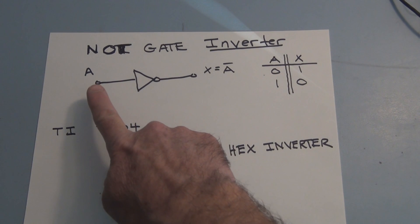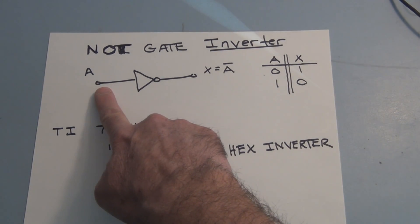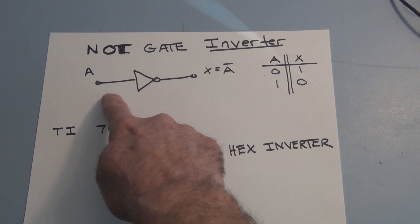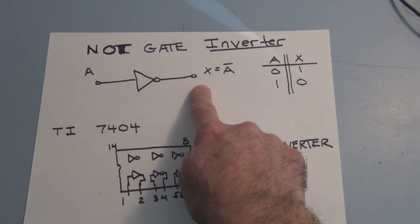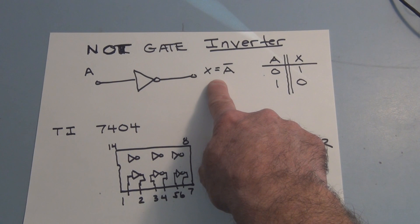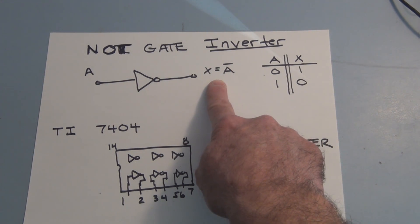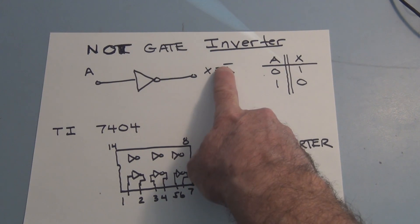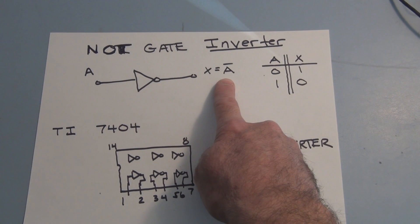So the inverter takes whatever is on the input and inverts it. If there is a one on the input, there will be a zero on the output. If there is a zero on the input, there will be a one on the output. And this is the Boolean algebraic expression for a NOT gate. X will equal A not. A with a line over it is A not.